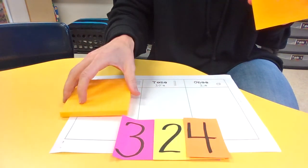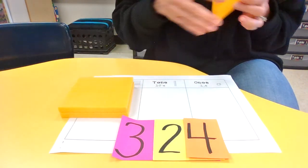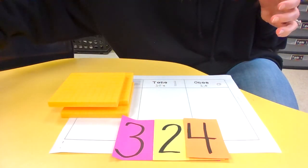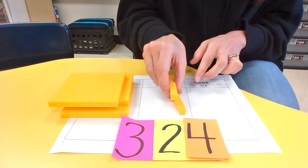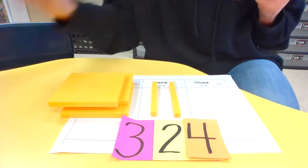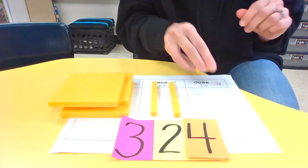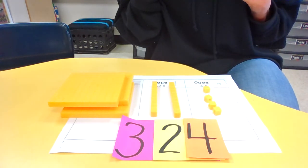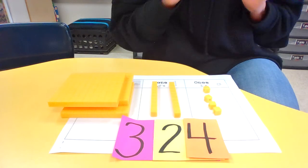All right, I'm going to start building mine. I'm going to start with my hundreds. So there's 100, 200, 300. I need 20, 10, 20. And then I'm going to go to my ones place. 1, 2, 3, 4. Is that what you had? Yay! Good job!